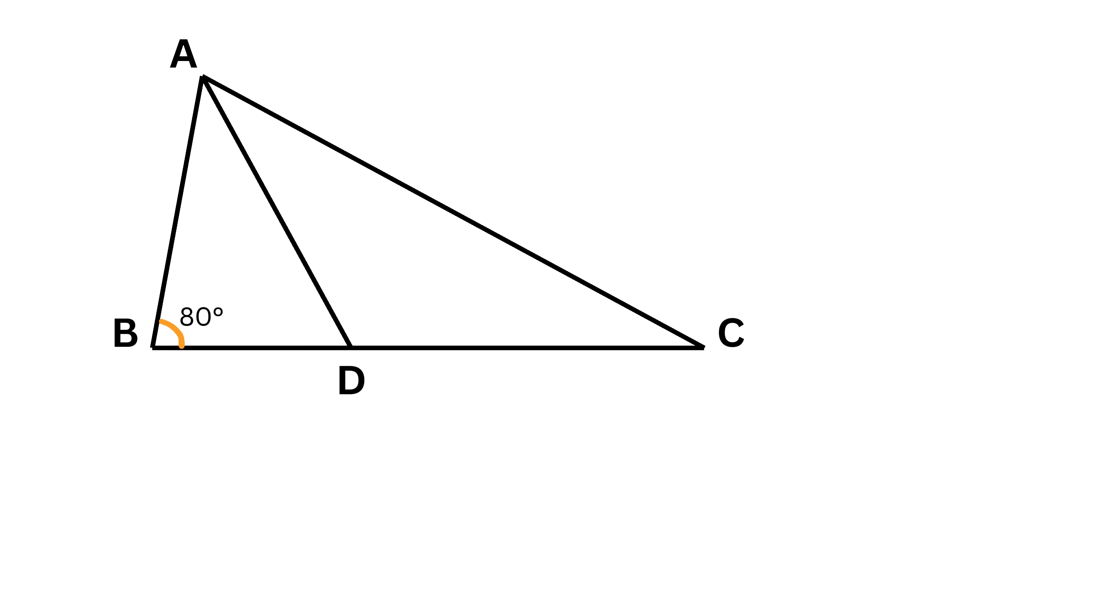Two angles are given: this angle is 80 degrees and this angle is 70 degrees. It is also known that the length of side AC is equal to the sum of segments AB and BD.